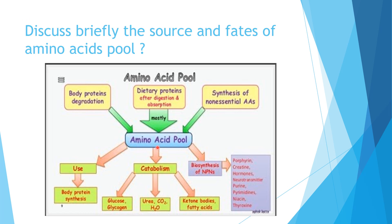Now we see what are the fates of this amino acid pool. The amino acid pool may be used for synthesis of new body proteins or for biosynthesis of non-protein nitrogenous compounds, including porphyrin, proteins, hormones, neurotransmitters, purines, and pyrimidines.